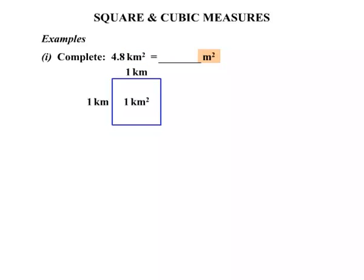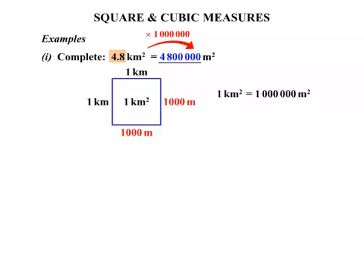We're dealing with square metres, so let's write that as 1,000 metres by 1,000 metres. So 1 kilometre squared, let's do the multiplication, we get a million square metres. So changing from kilometre squared to metre squared we're going to multiply by 1,000,000. And 4.8 times a million is 4,800,000.